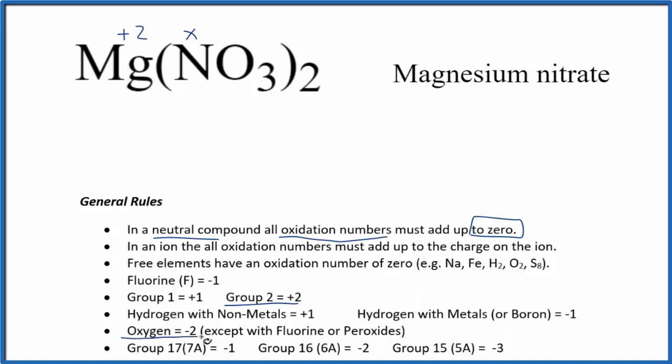Oxygen is -2, except with fluorine and peroxides. So we say -2 for the oxygen, and remember that's each oxygen. We have 3 oxygens in the nitrate here.